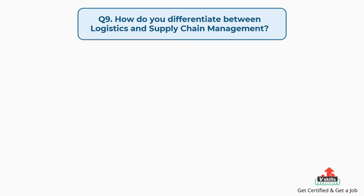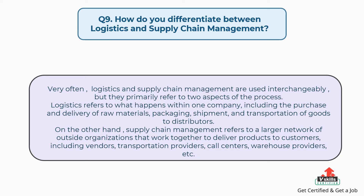Question number nine: how do you differentiate between logistics and supply chain management? The answer is very often logistics and supply chain management are used interchangeably, but they primarily refer to two aspects of the process. Logistics refers to what happens within one company, including the purchase and delivery of raw materials, packaging, shipment, and transportation of goods to distributors.